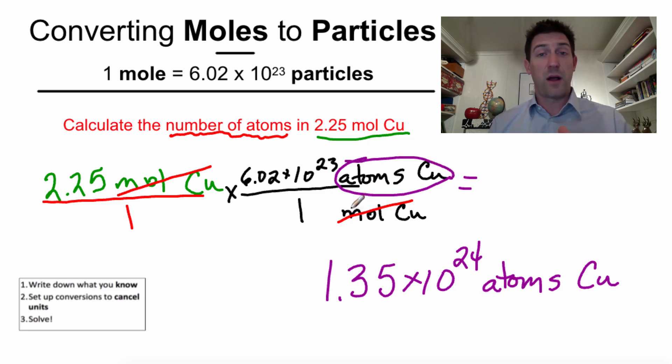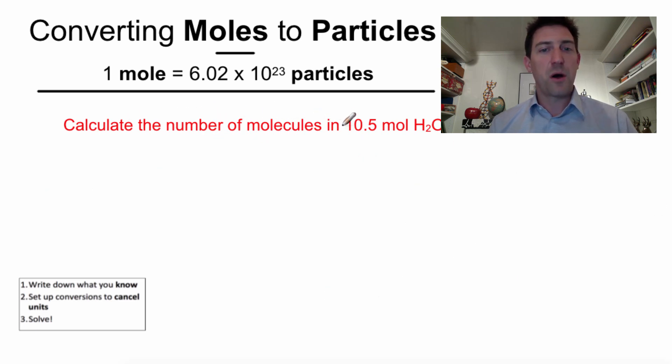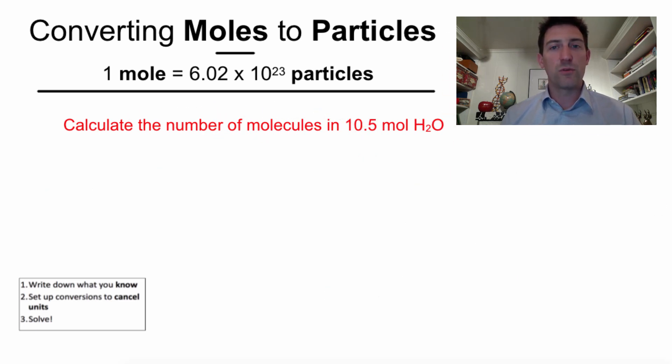You're going to find out through a series of problems. We turn everything into the mole because once we have it in the mole, we can turn it into anything we want. Let's try another practice problem here. Calculate the number of molecules in 10.5 moles of water. Again, I don't memorize formulas. I don't need to. I've got 10.5 moles of water. That's my known. That's what's given to me. So, I have to start somewhere. I might as well start with this. I've got 10.5 moles of water, H2O.